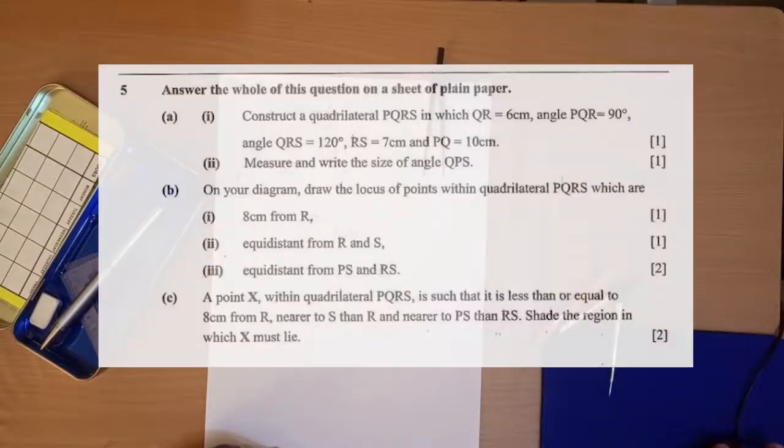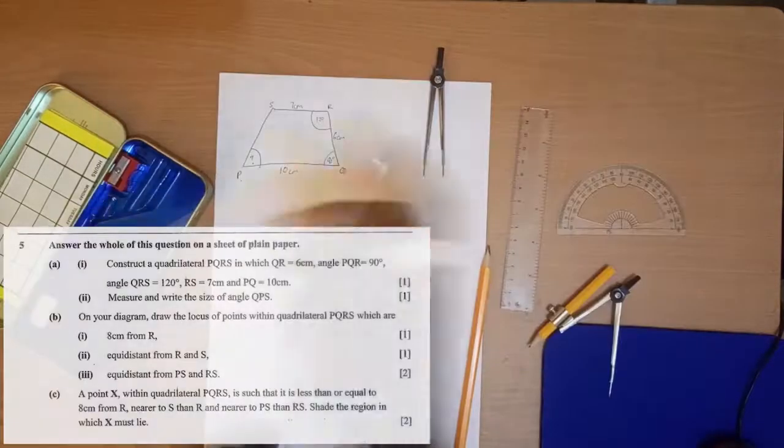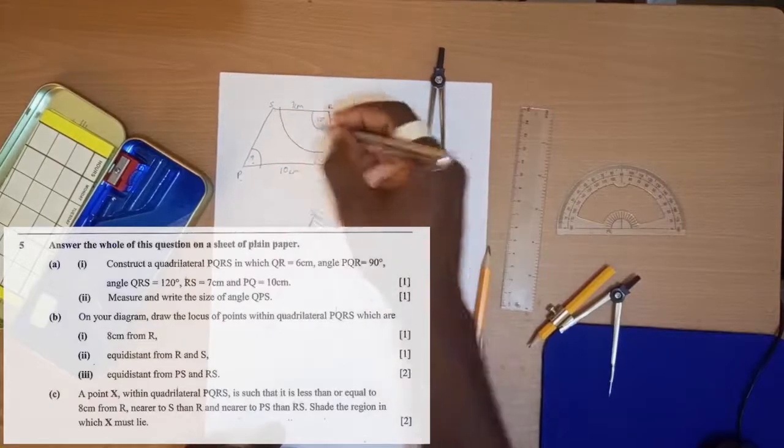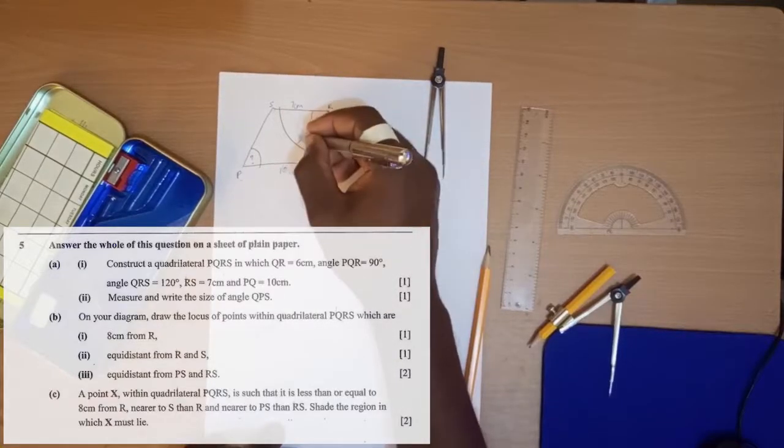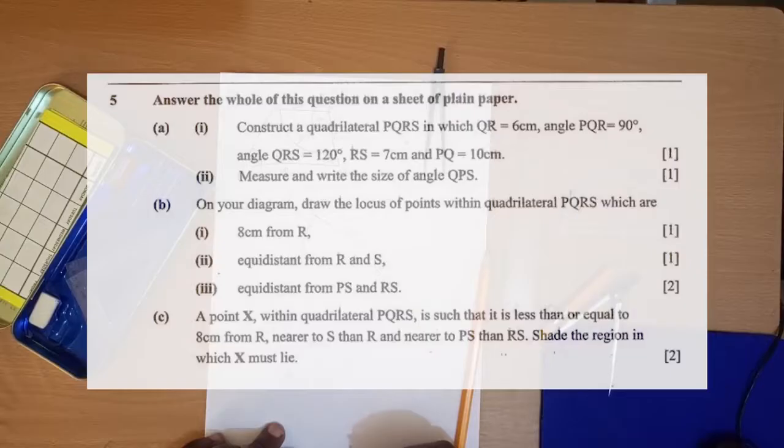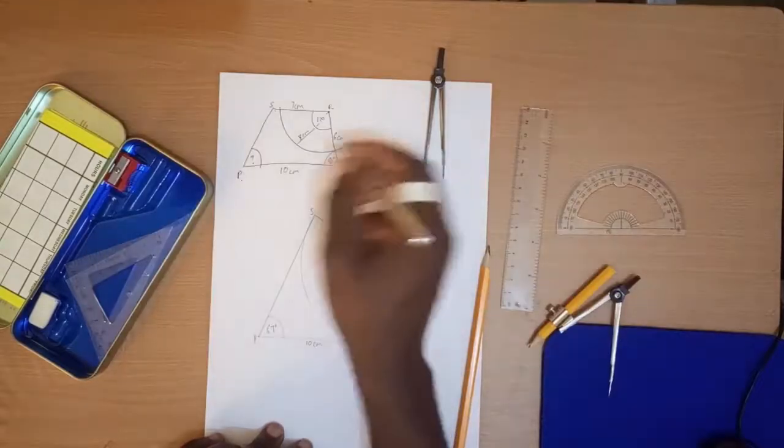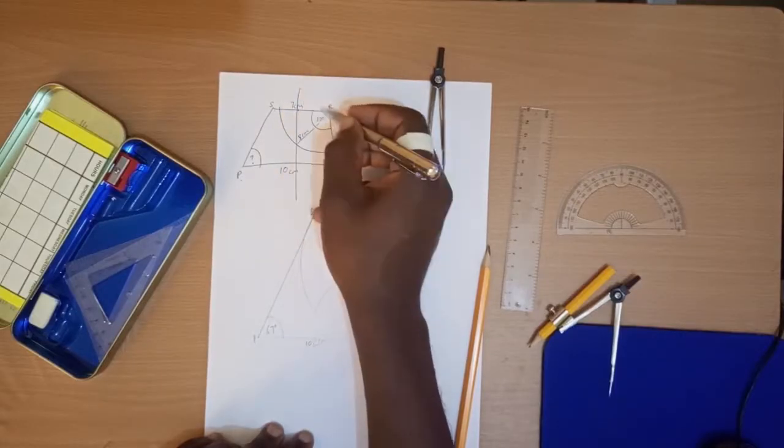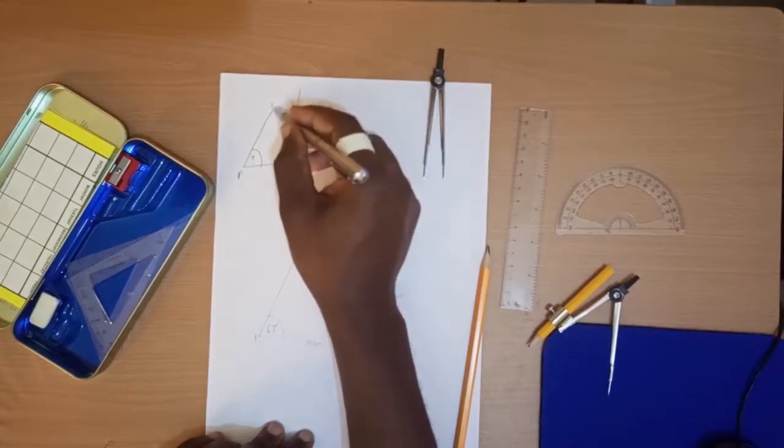Let's go to question 5B. Question 5B says, on your diagram, draw the locus of points within the quadrilateral QPRS which are 8 centimeters from R. 8 centimeters from R, so you stand on R, locus of points which would be 8 centimeters from R. Number 2: equidistant from R and S. Equidistant from R and S, meaning it should cut across, making the distance from here to R and the distance from there to S being equal.